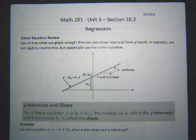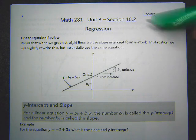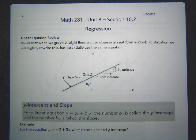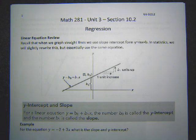Hello and welcome to our stats note from section 10.2, regression. We're going to be working with two sets of values that we graph on scatterplots. We'll look at how to get the equation for the line of best fit and then use that to make predictions for values along that line.